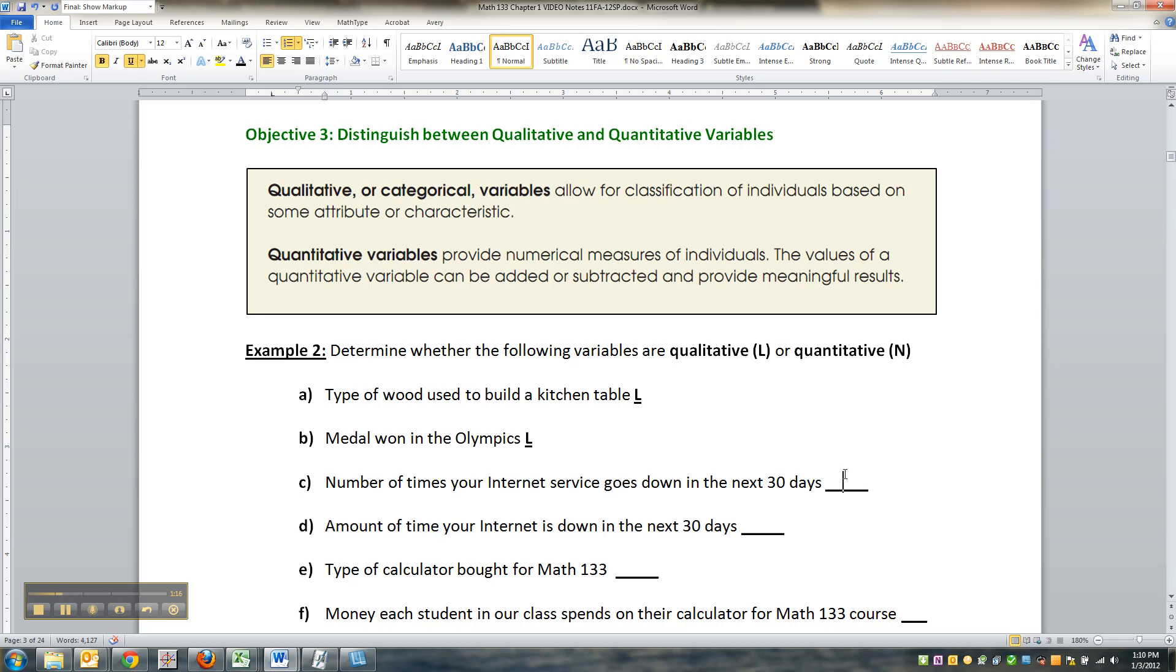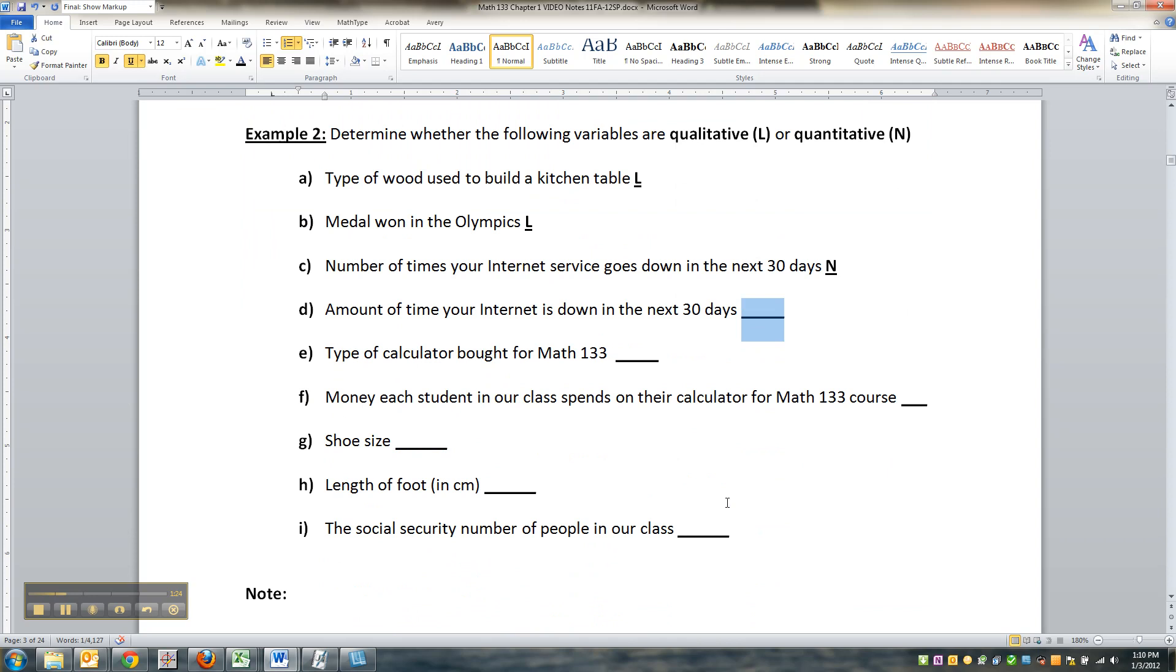The number of times your internet service goes down in the next 30 days - that is quantitative. For example, it went down 10 times for me. Now, how much time your internet is down - my internet's down for 3 hours and 22 minutes and 14 seconds - that's also quantitative.